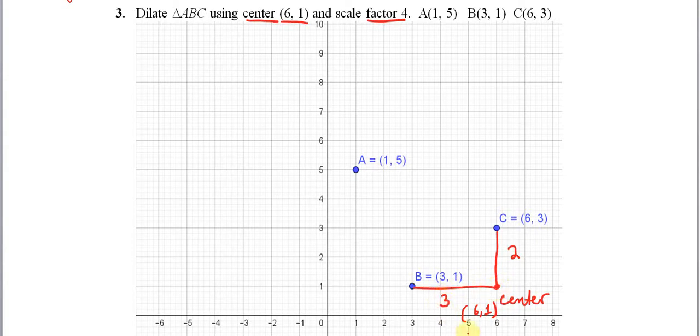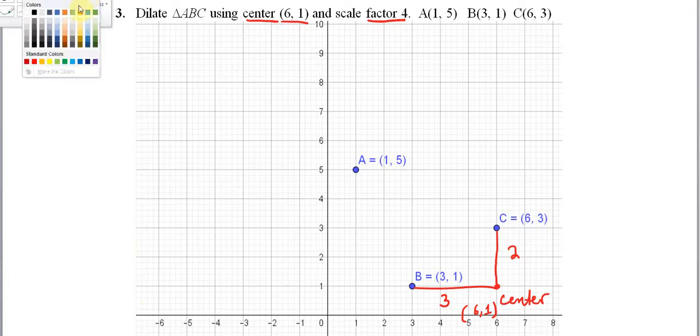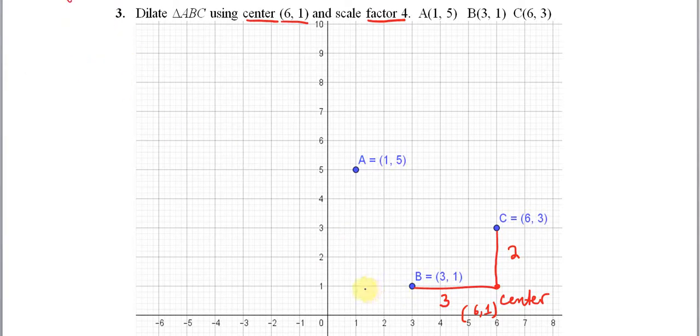And then for A, because A does not lie on a horizontal or vertical line with the center, I have to do this in two parts. So for A, this purple line here is a distance of 1, 2, 3, 4, 5. Okay, so that purple line has a length of five.